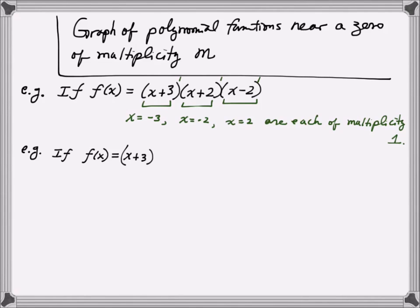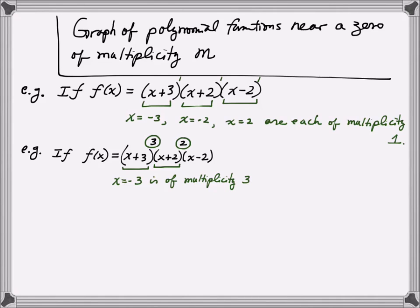If I now modify this and write f(x) = (x + 3)³(x + 2)²(x - 2), then the factor (x + 3) appeared three times, so the zero x = -3 has multiplicity 3. The factor (x + 2) appeared two times, so x = -2 is of multiplicity 2. And the factor (x - 2) only appeared once, so x = 2 is of multiplicity 1.